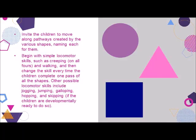For this first activity, you'll want to have pictures posted of circles, triangles, and squares — the three simplest shapes. You'll also need some masking tape with which to create circles, triangles, and squares on the floor. Once you've done that, invite the children to move along pathways created by the various shapes, naming each for them.